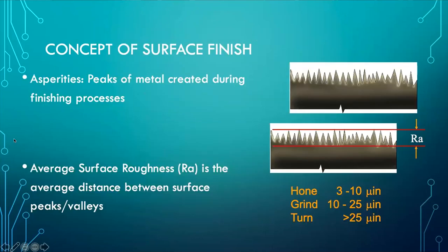When we look using a microscope at any surface, it appears to have a number of peaks and valleys. The average difference between peaks and valleys is measured by RA — surface roughness. For a honed surface, RA is between 3 to 10 micro-inches. For a ground surface, it is typically between 10 to 25 micro-inches. For a turned surface, it is greater than 25 micro-inches.